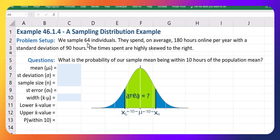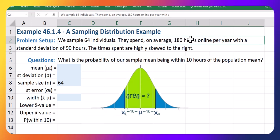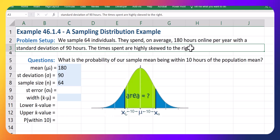We sample 64 individuals, so our sample size is 64. They spend, on average, 180 hours online per year. That's the average from the sample, with a standard deviation of 90 hours. The times spent are highly skewed to the right.